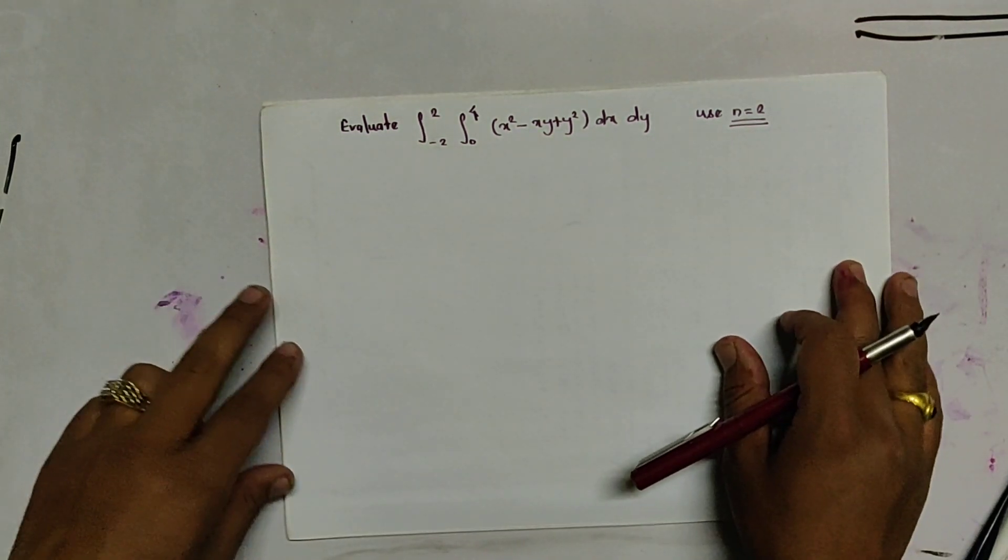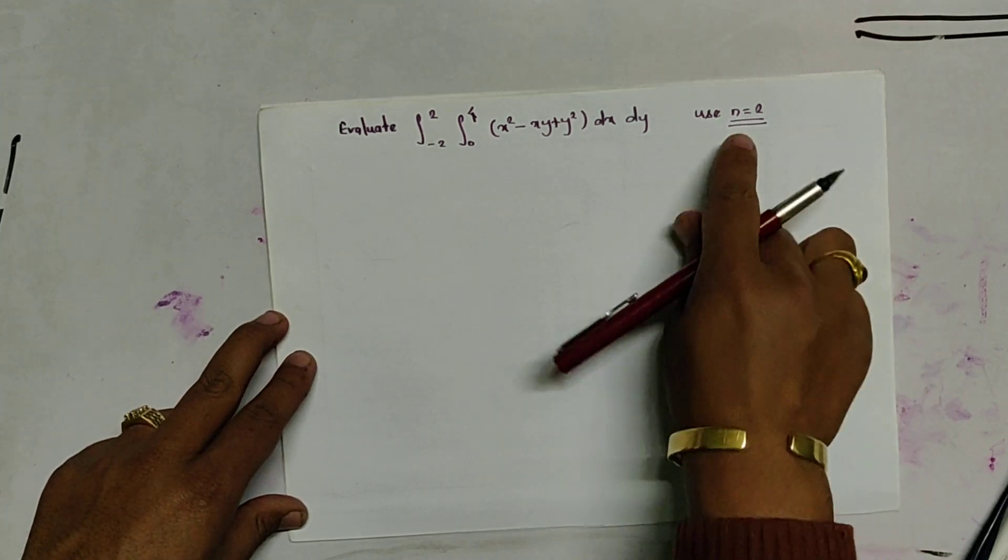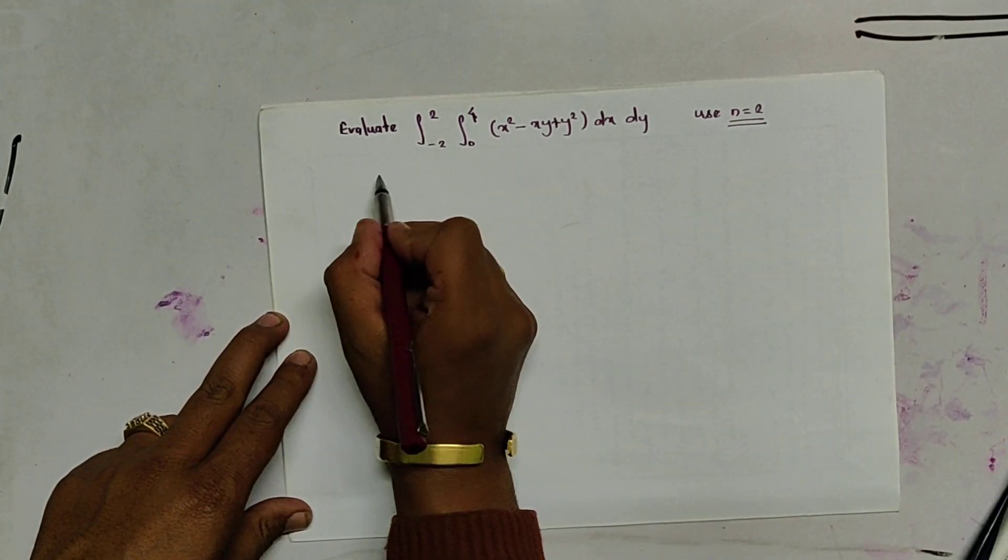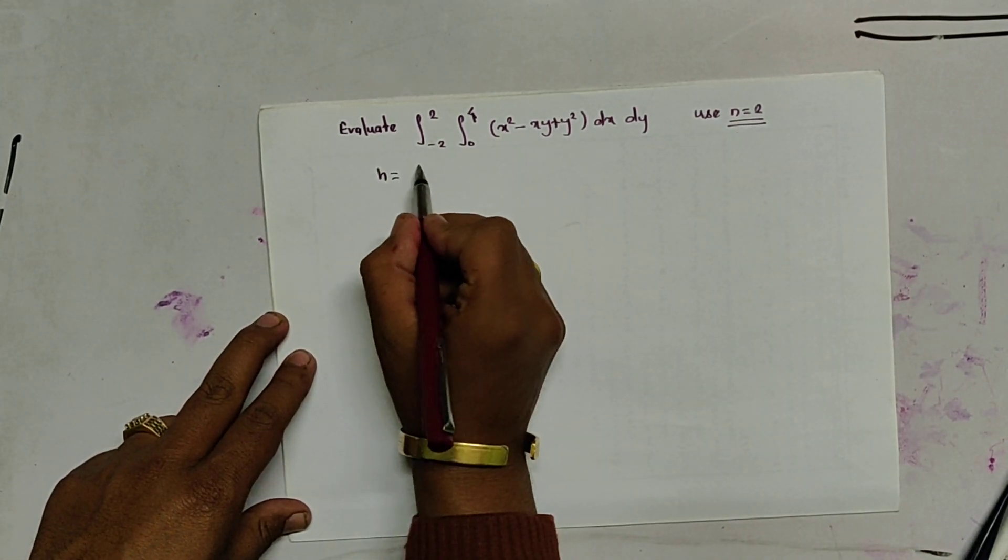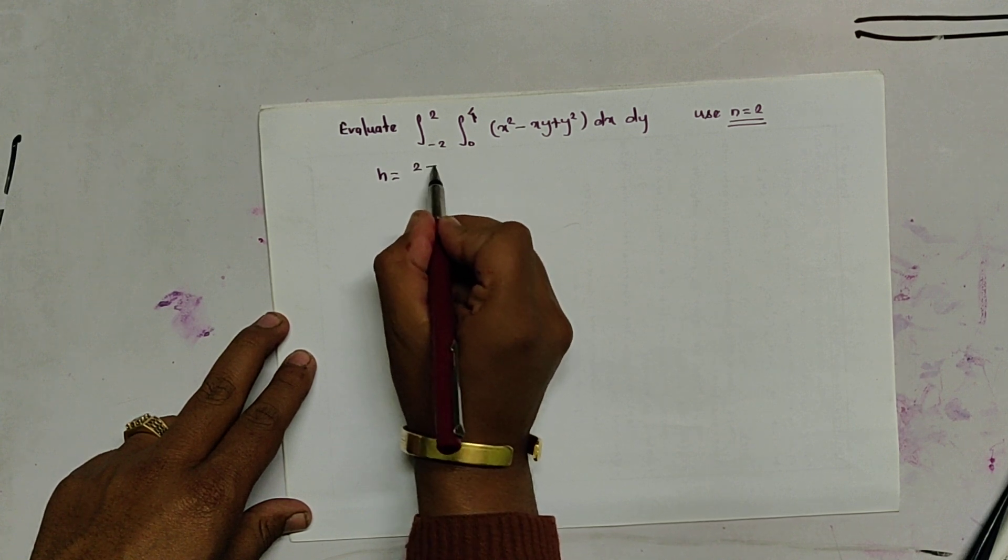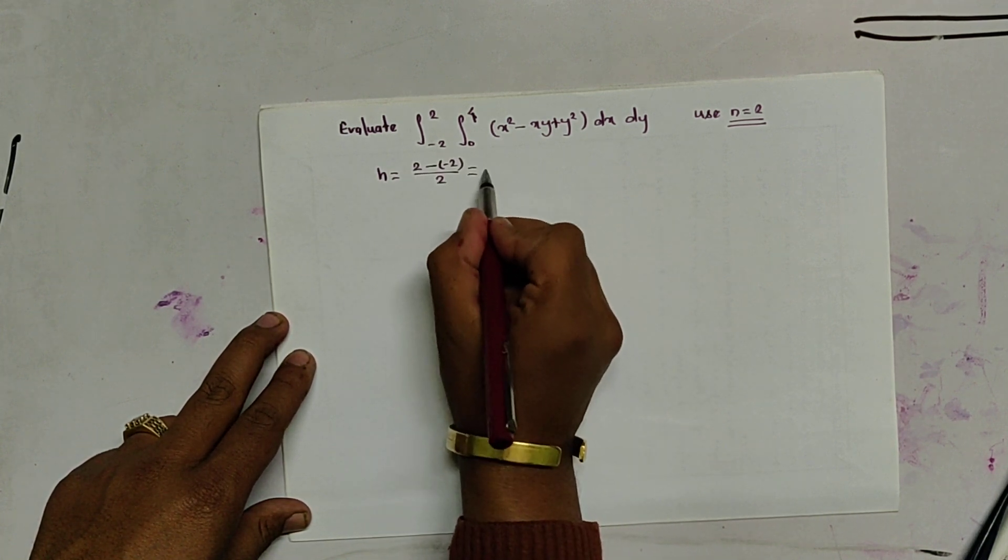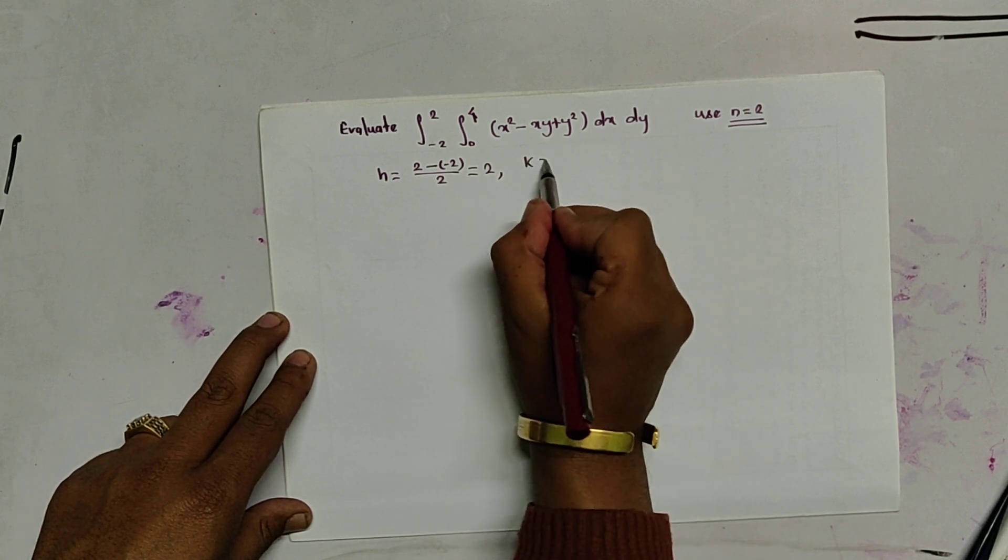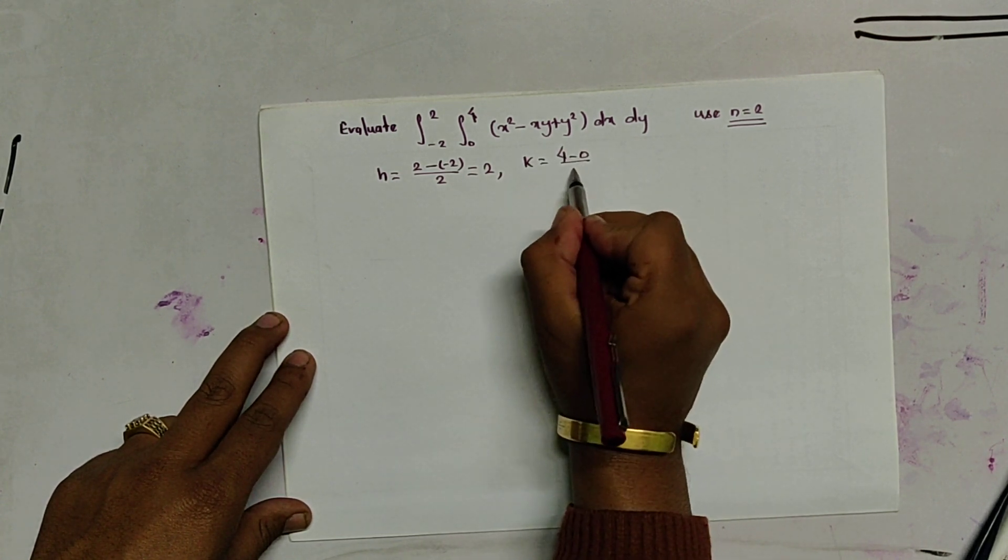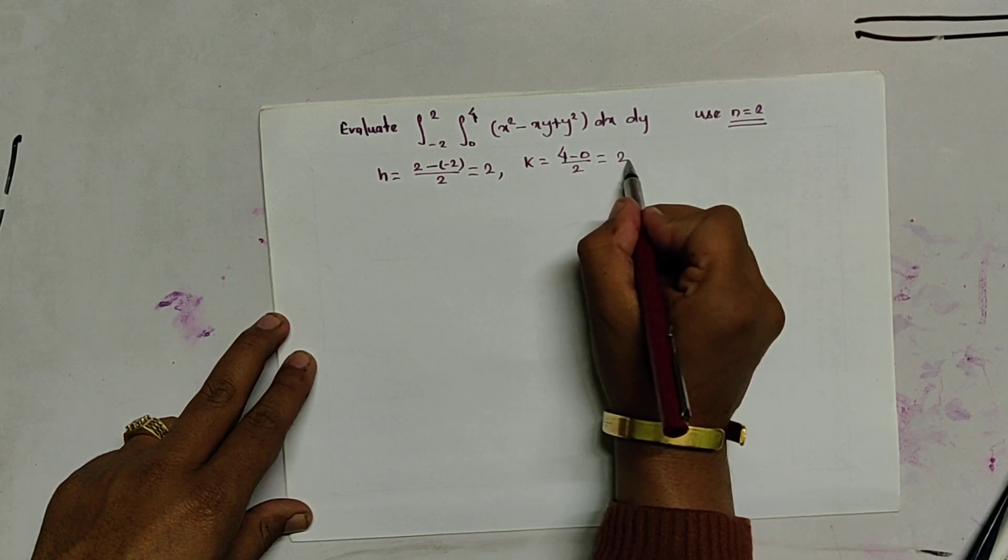So first, let us calculate the value of h. Here n is equal to 2. So h is equal to 2 minus minus 2 by 2. It is 2. And k is equal to 4 minus 0 by 2 is equal to 2.